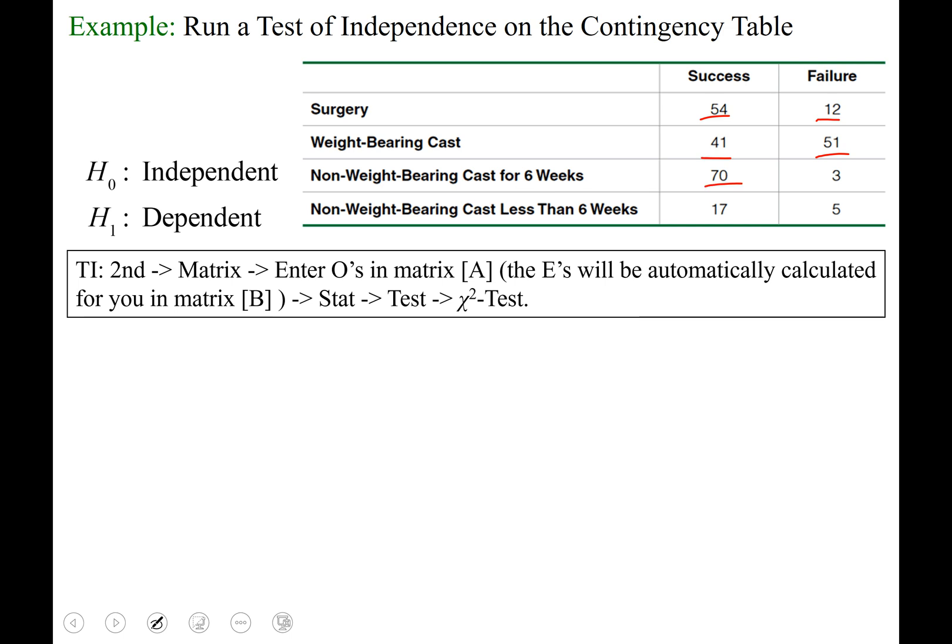Arrow down and over for 70, arrow over for 3, 17, and 5. Okay, once you've got your observed frequencies into matrix A, then you're going to hit stat.